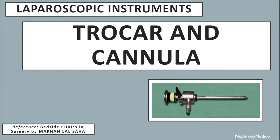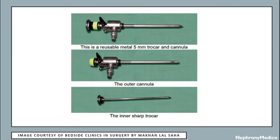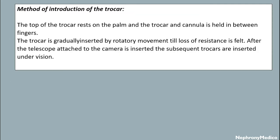Let's talk about the trocar and cannula, which are laparoscopic instruments. This is a picture showing the trocar and cannula. Method of introduction: the top of the trocar rests on the palm and the trocar and cannula are held between the fingers. The trocar is gradually inserted by rotating movement until loss of resistance is felt. After the telescope is attached to the camera, the camera is inserted and subsequent trocars are inserted under vision.